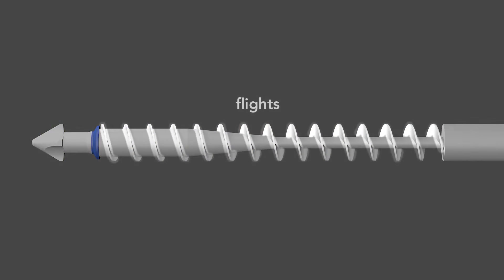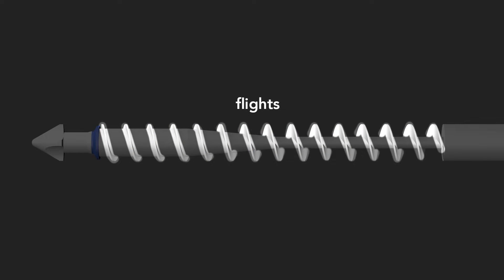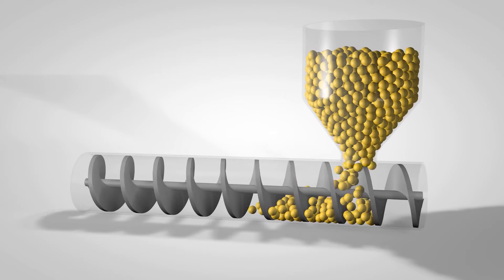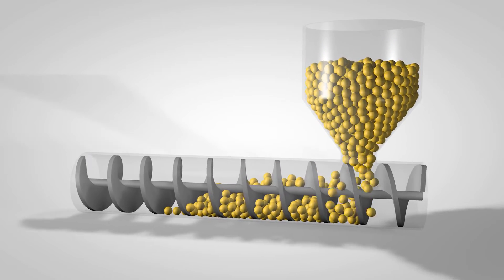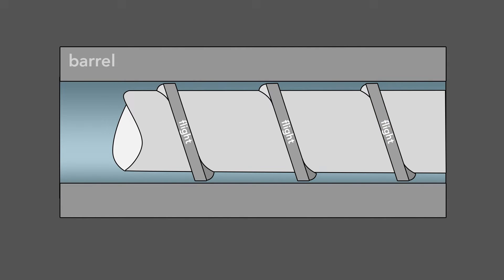Second, the screw has flights that wrap around the shaft. As the screw rotates, the flights transport the raw material forward through the barrel. The flights also serve to mix the plastic. The screw action agitates the melting pellets within the flights to create a uniform mixture.